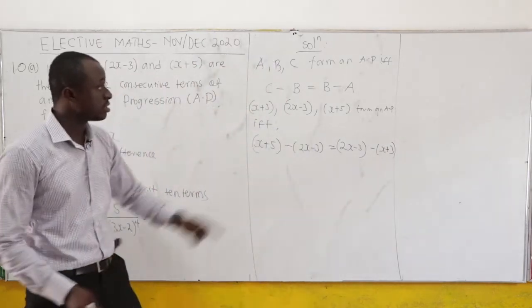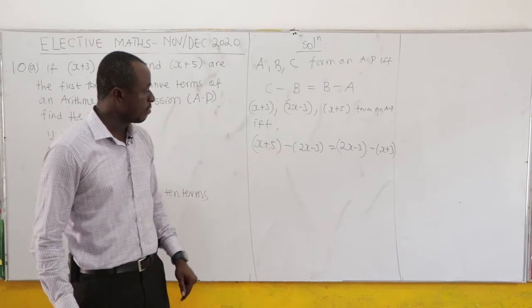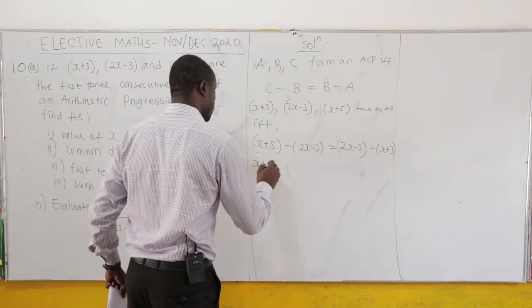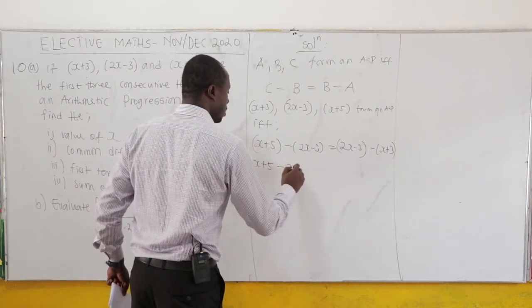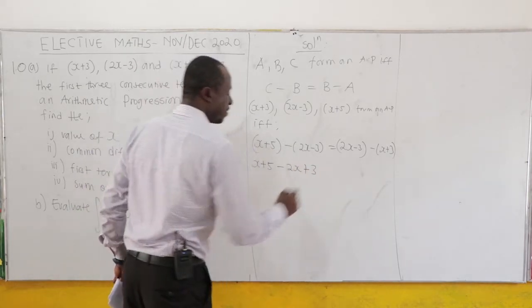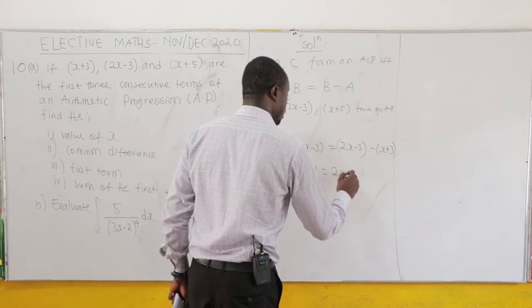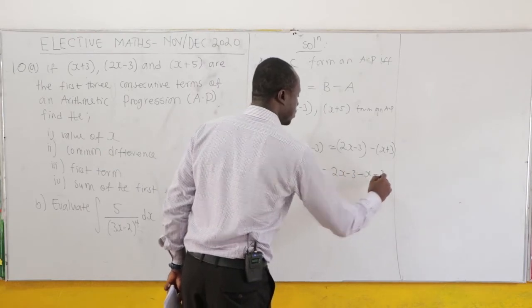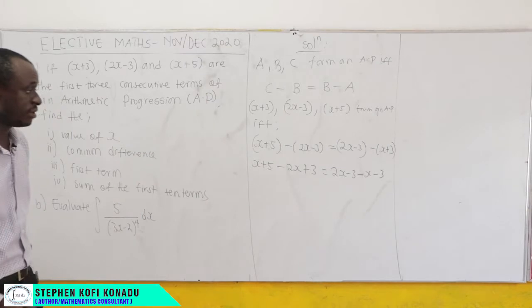So this is c minus b equal to b minus a. Expanding: x plus 5 minus 2x plus 3 equals 2x minus 3 minus x minus 3.